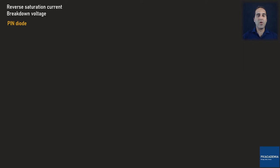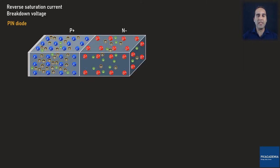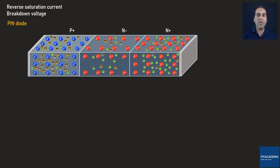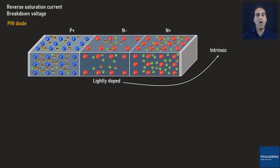A PIN diode consists of a P-plus region, an N-minus region, and an N-plus region. In other words, the N-minus region is sandwiched between the two highly doped P and N semiconductors. Since the sandwiched N-minus region is so lightly doped, it can be considered intrinsic — this is why it is sometimes called the intrinsic region. This diode is called PIN, and the N-minus region is normally referred to as the base, with its width shown by W sub B.